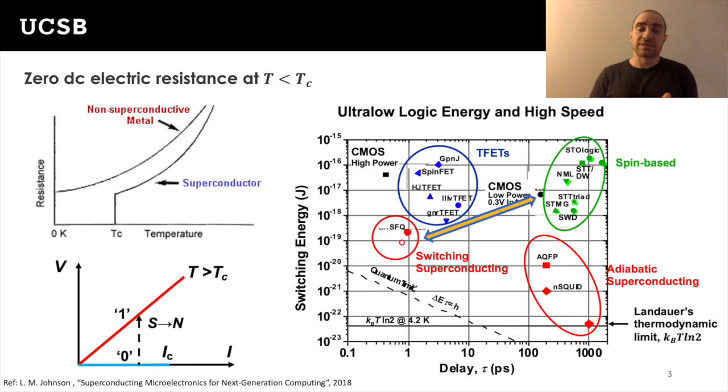Besides its advantages though, superconducting is still considered a highly complex solution. Are the challenges in adopting this technology inherent to the nature of the exotic materials and environmental? Or are they an outcome of the mismatch between the existing computational abstractions and what superconducting devices actually provide?